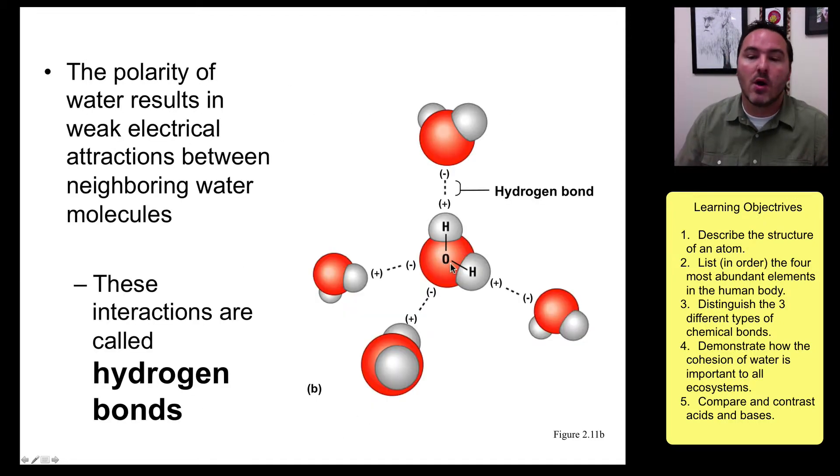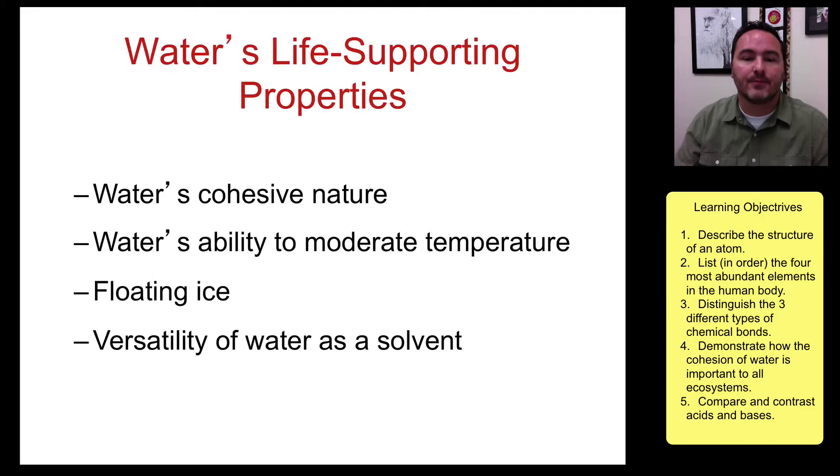Then when you get a bunch of water molecules together, they start to bind to each other, and that's called the hydrogen bond, where the positive end of a water molecule binds with the negative part of another water molecule. It's these hydrogen bonds that allow water to bring life. How? Well, this allows for these four different things to happen. Cohesive nature, the ability to moderate temperature, the ability of ice to float, and then the versatility as water of a solvent. And we'll look at each of these quickly.